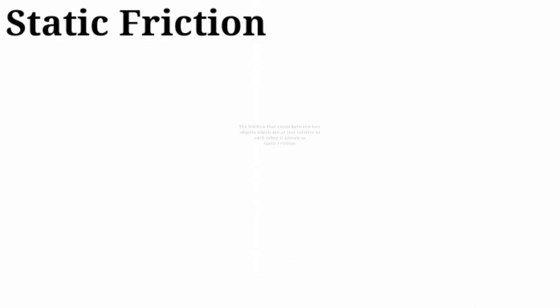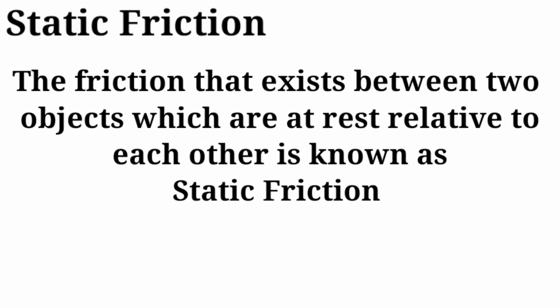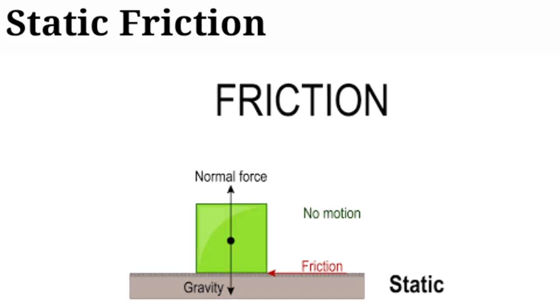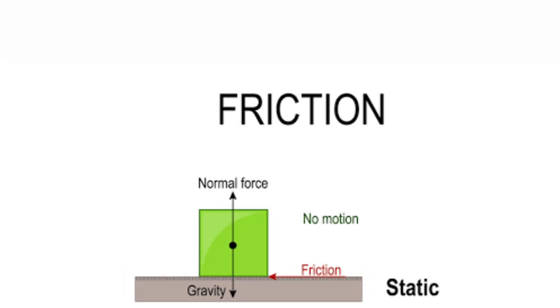The friction that exists between two objects which are at rest relative to each other is known as static friction. In static friction, there is no movement in the object.